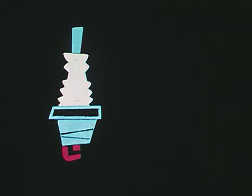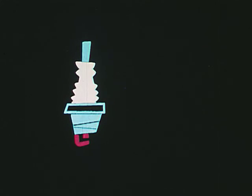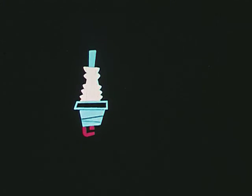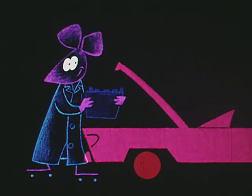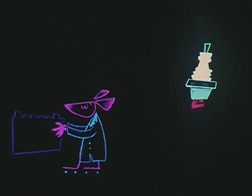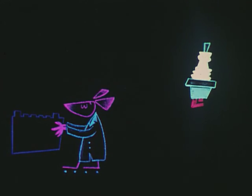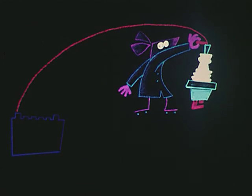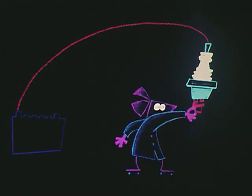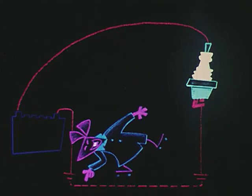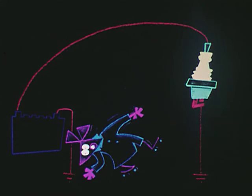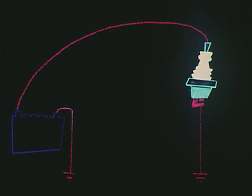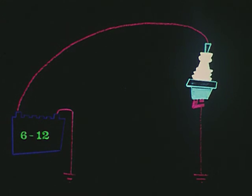The spark plug doesn't make the electricity. That's the job of the rest of the ignition system. The battery is the source of electricity in practically all automotive ignition systems. To make a circuit, we need to get electricity to its destination and a return path to complete the circuit. To simplify wiring, connections are grounded to the engine or frame, and this can always be assumed even though it isn't shown.